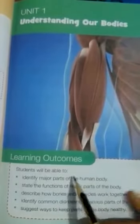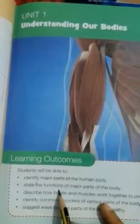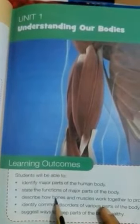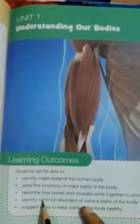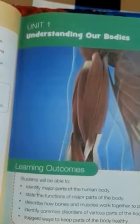The learning outcomes of this chapter are: identify the major parts of the body and their function; describe how bones and muscles work together and help in movement; identify the common disorders and their causes; and suggest ways to keep the parts of the body healthy.